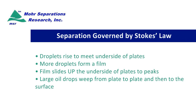The droplets rise to meet the underside of the plates. As more droplets come along they form a film. The film slides up the underside of the plates by their buoyancy and comes to the peaks of the plates. Large oil droplets then weep from plate to plate to plate and then to the surface. With this kind of system we're actually converting droplets less than 40 microns — smaller than what the human eye can see — into really large drops the size of a grape or perhaps the end of your thumb.